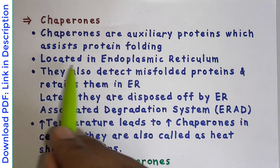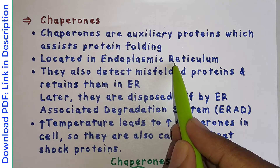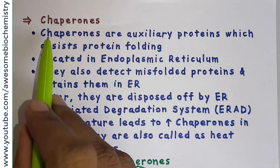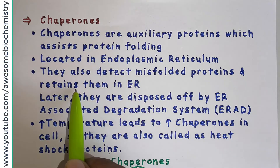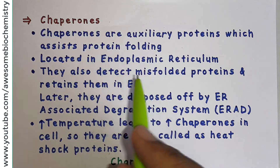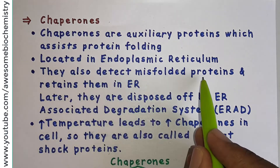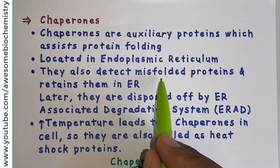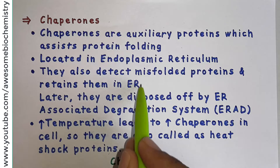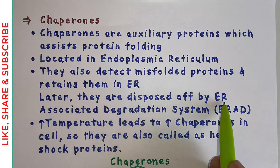Chaperones are located inside the endoplasmic reticulum, so protein folding occurs inside the endoplasmic reticulum. Along with helping other proteins in folding, chaperones also detect misfolded proteins and retain them in the endoplasmic reticulum, acting as quality control. If some proteins are misfolded, the chaperone detects them and retains them, and later these misfolded proteins are disposed of by the endoplasmic reticulum-associated degradation system — the ERAD system.